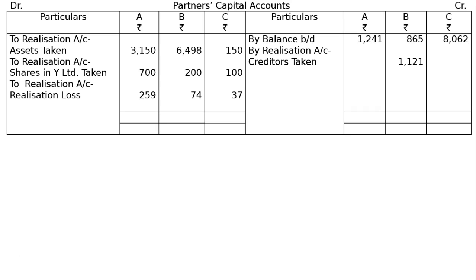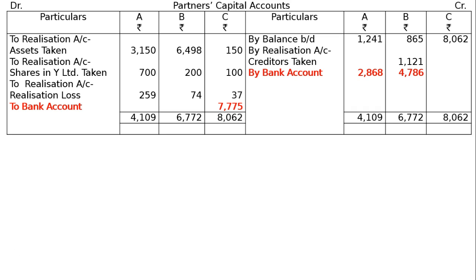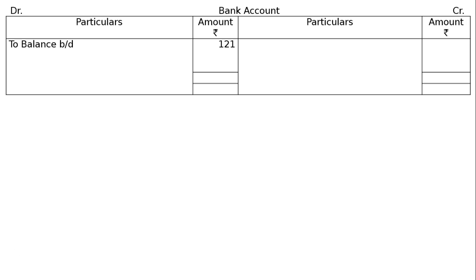Now we have to finalize the payments. On the debit side, A and B have a higher value than the credit side. Total C's Capital Account — on the credit side it is Rs. 8062; the difference is Rs. 775, which will be withdrawn by C to Bank Account. A and B will bring in funds; total the debit side: A Rs. 4109, B Rs. 6772. By Bank Account: A Rs. 2868, B Rs. 4786. In the Bank Account, we write: Balance Brought Down Rs. 121, to A's Capital Account Rs. 2868, to B's Capital Account Rs. 4786. C will withdraw by C's Capital Account Rs. 775.